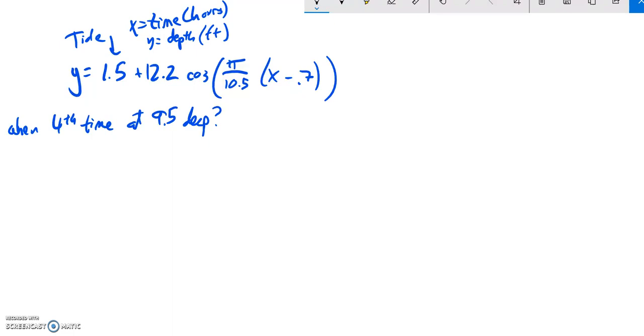So I noticed that this equation is supposed to simulate how a tide's moving, the relationship between the time in hours and the depth in feet. We want to know when's the fourth time after midnight, this starts at midnight on January 1st, the fourth time will it be at 9.5 deep?